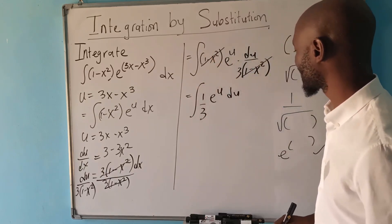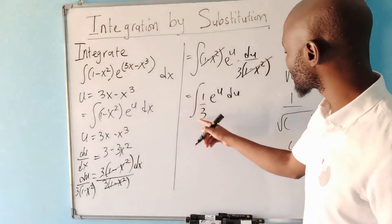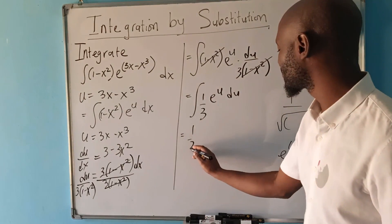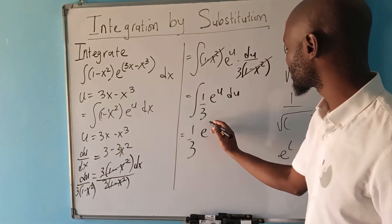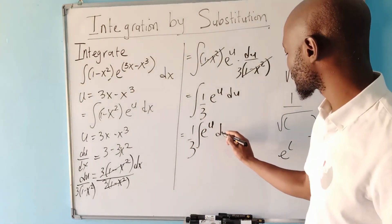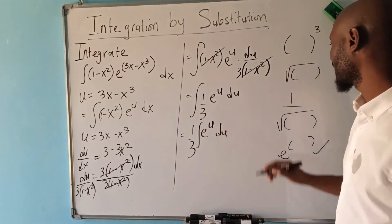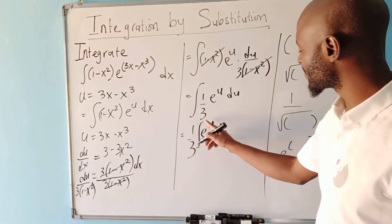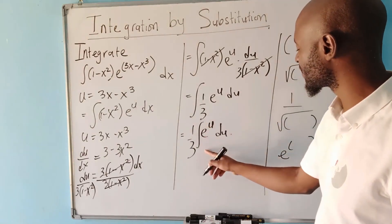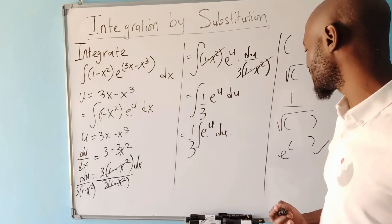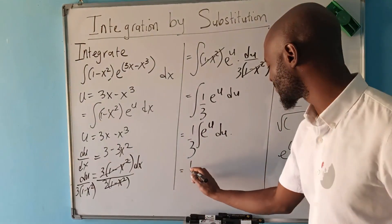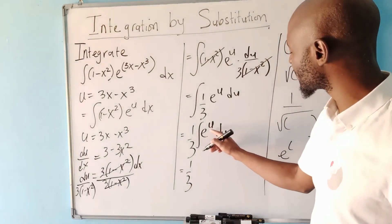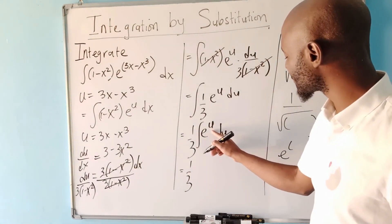This is the result you can see here. If you have a constant, you can pull it out of the integral symbol. So we are going to have (1/3) times the integral of e^u with respect to u. Remember we are integrating indefinitely, so we need to add a constant. When integrating e^u, it repeats itself.